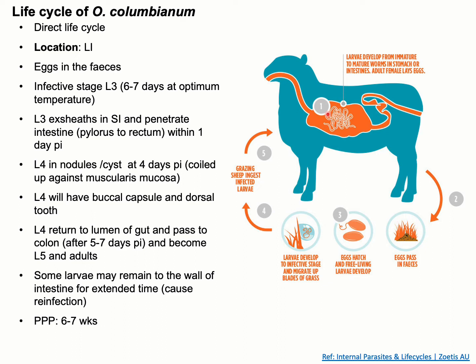In the lumen of the large intestine, another molting from L4 to L5 occurs, and finally they become adult parasites. For the completion of this life cycle, it takes around six to seven weeks.